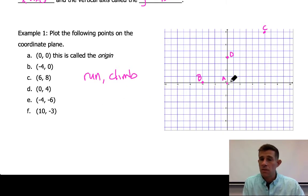Negative 4, negative 6 now implies that I'm going to run left 4 and I'm going to climb down 6. So here's our point E, (-4, -6). And then point F is (10, -3). So now I'm going to run to the right 10 and now I'm going to climb down 3. And you can see here that's negative 2. Negative 3 is this guy right here. And that's my point F. So that's just a little bit of review of plotting points in the coordinate plane.